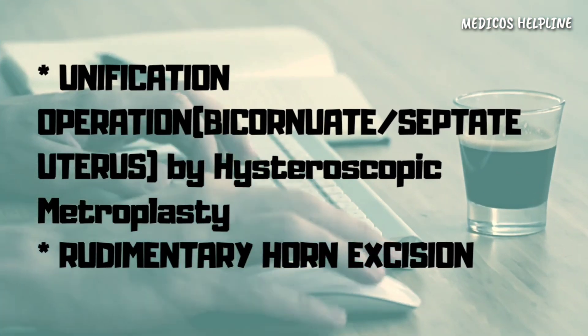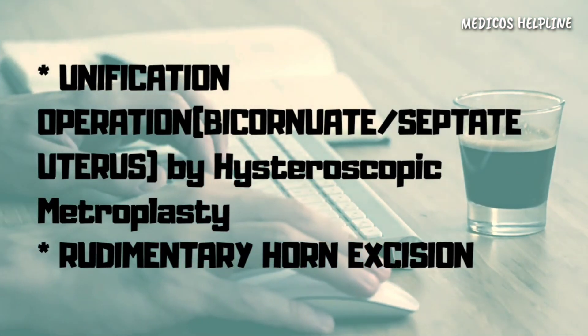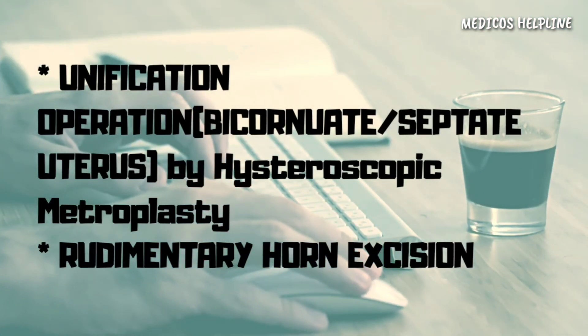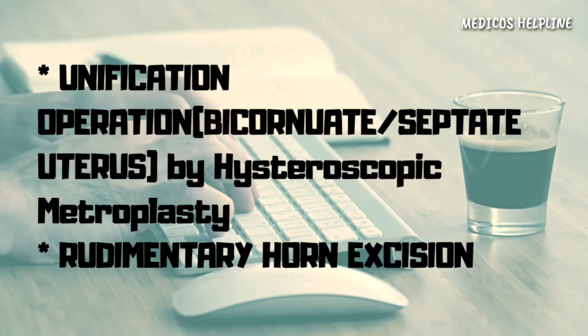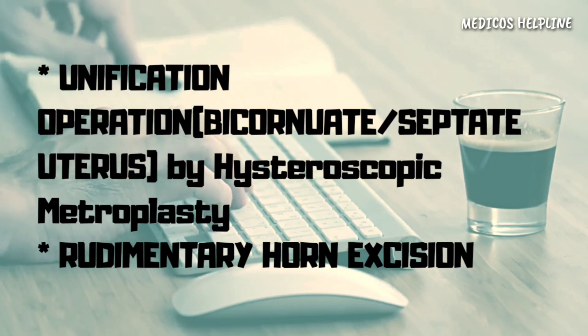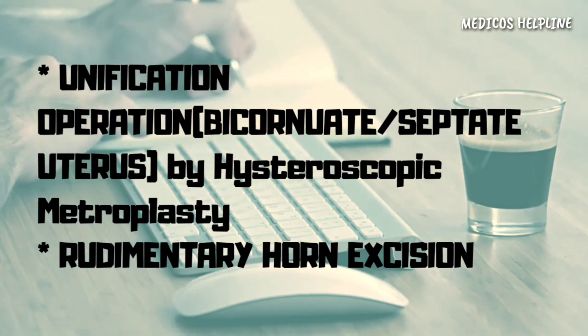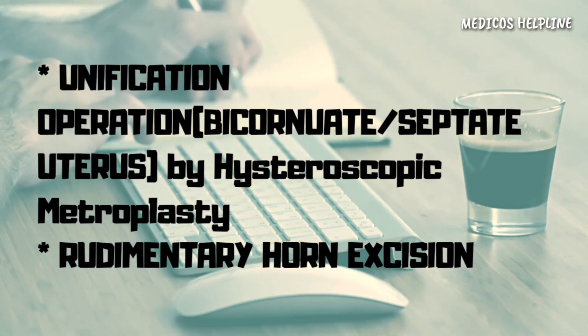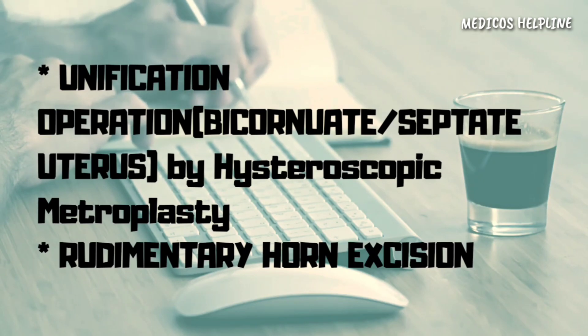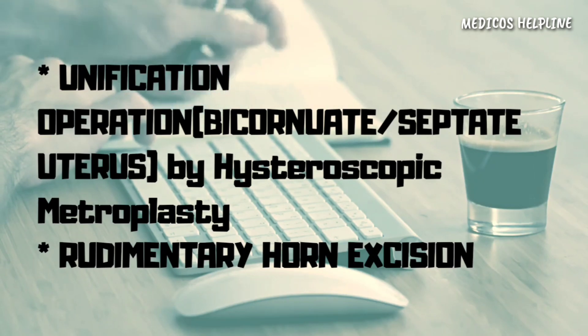In the case of septate and bicornuate uterus, which has the best obstetric outcome, the septum is either excised or incised. The rudimentary horn should be excised to reduce the risk of ectopic pregnancy.